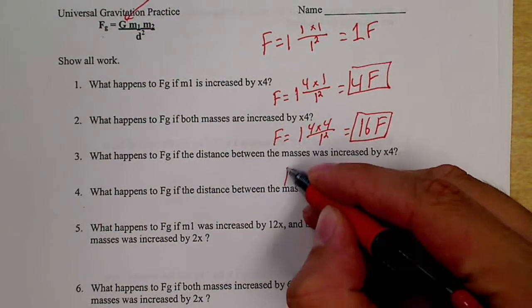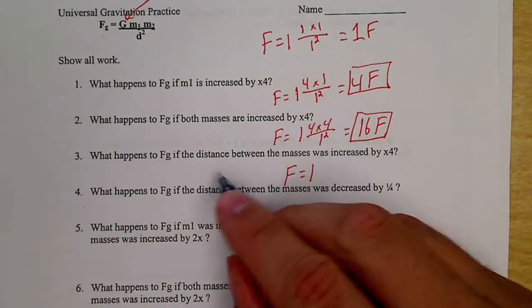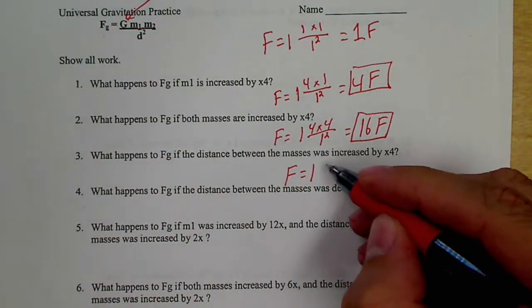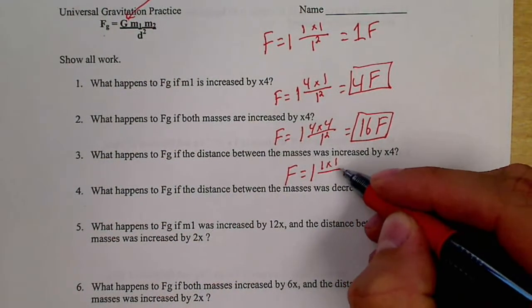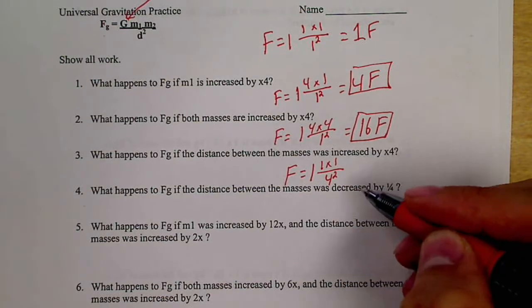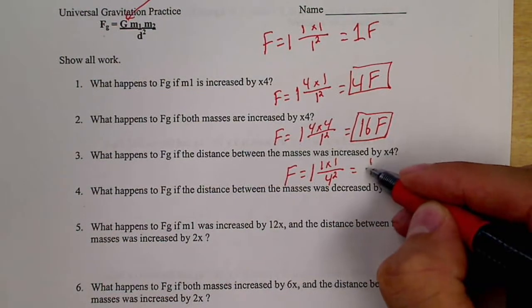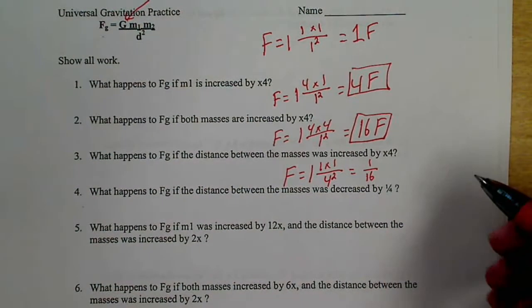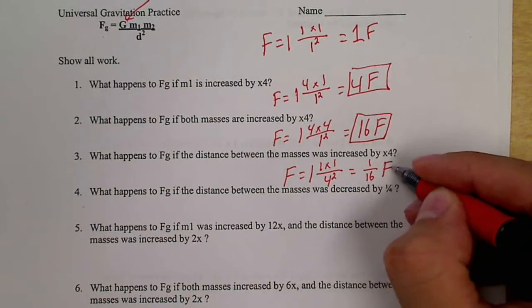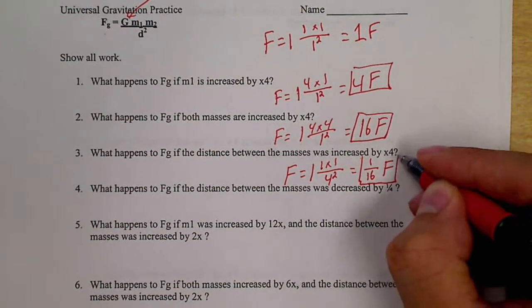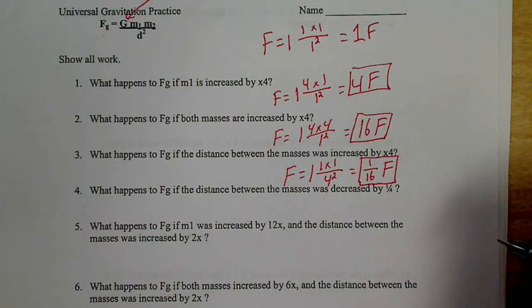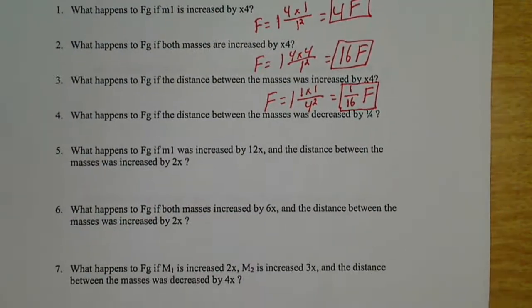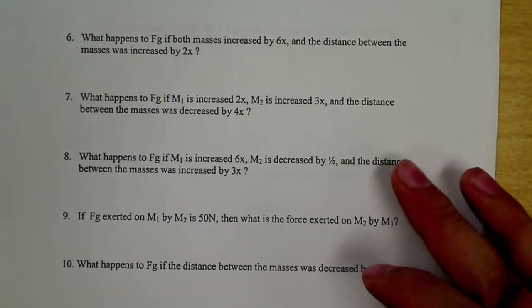Now the distance, so the distance between the masses increased by four, so I still have the same mass. My distance is increased. Now this is still one on top, but it's 16 on bottom, so it's one-sixteenth. So it's actually making my force significantly smaller. Let's move down a little bit. Let's look at a couple of those more tricky ones.